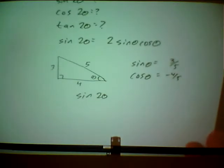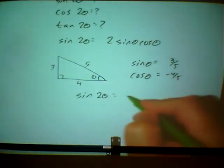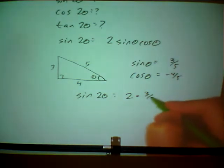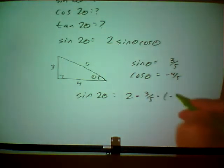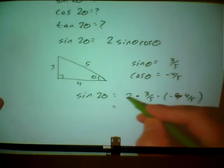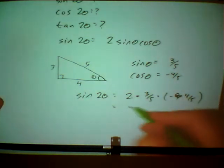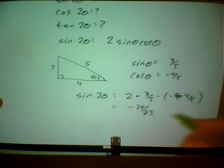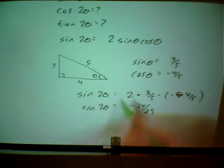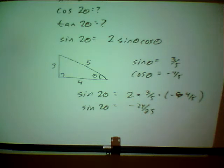And now I have what I need to calculate the sine of two theta. It's two times the sine of theta, which is three-fifths, times the cosine of theta, which is negative four-fifths. So you multiply these out. That's six, I think it's negative 24 over 25. So that's the sine of two theta. And then the cosine of two theta and the tangent of two theta, just plug them into the formulas and you get the answer.